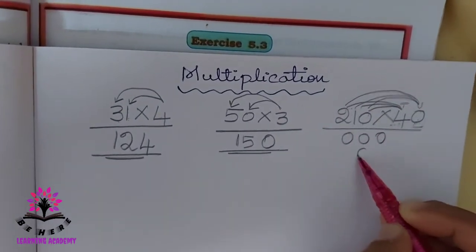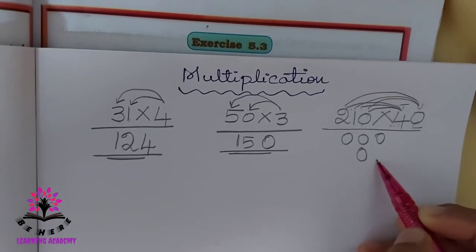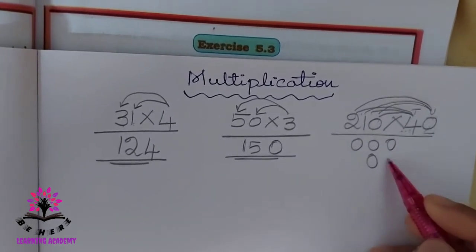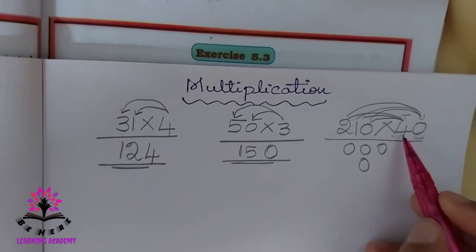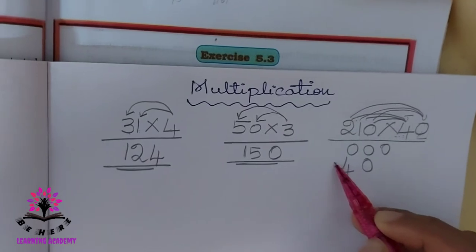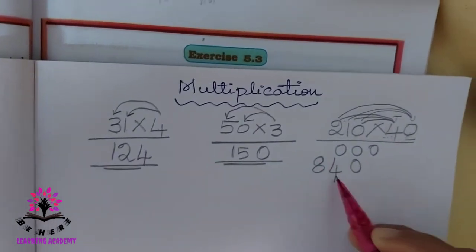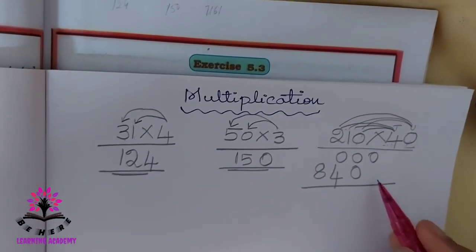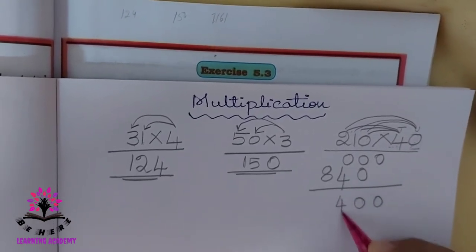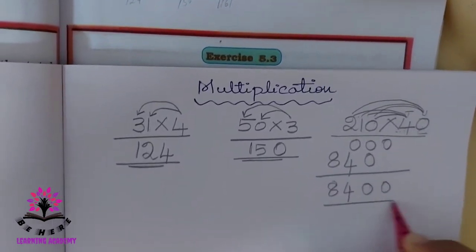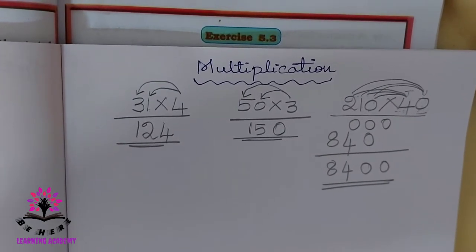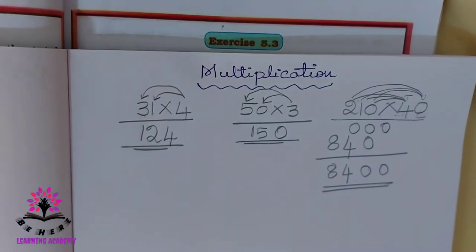4 times 0 is 0. Here you have to leave one space, as you have studied in your last class. 4 times 1 is 4. 4 times 2 is 8. So the digits are 0, 0, 4, 8. The answer is 8,400.